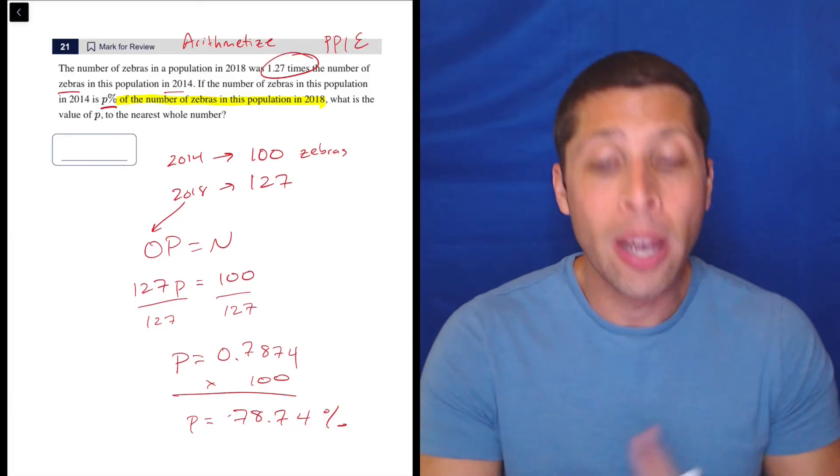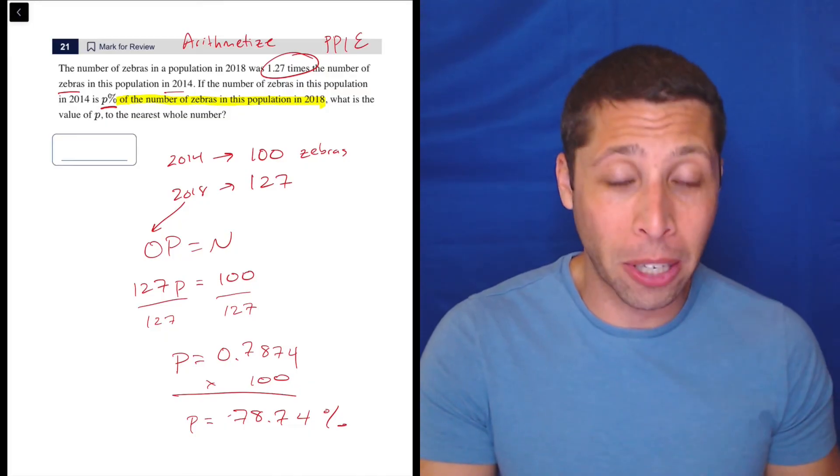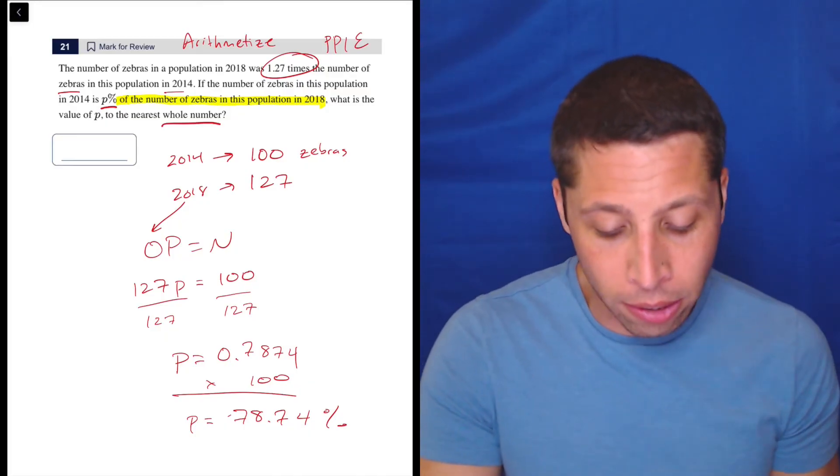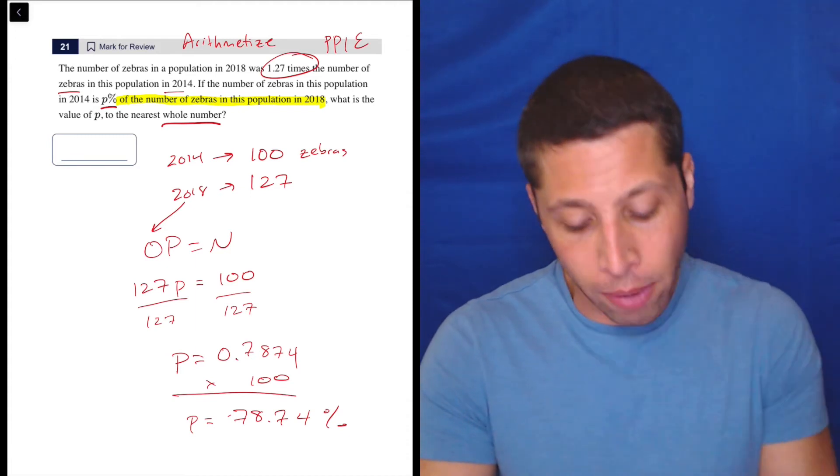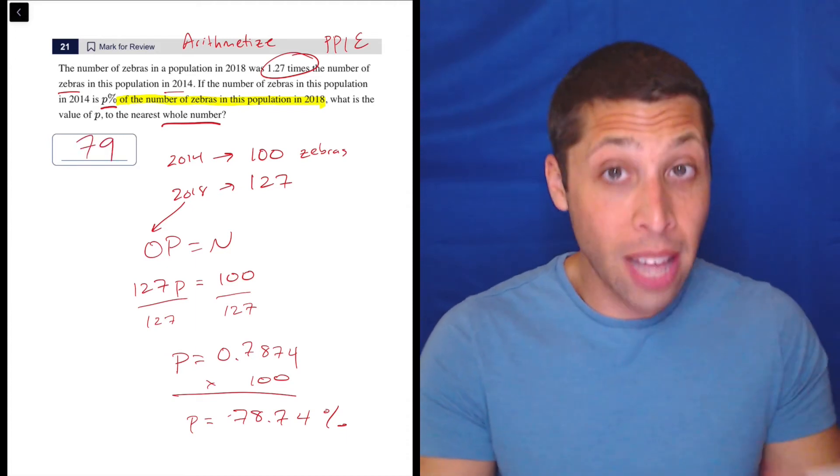And so we just got to remember to convert back at the end. And then they told us to round to the nearest whole number. So 78.7 is going to round up to 79. So that's the answer.